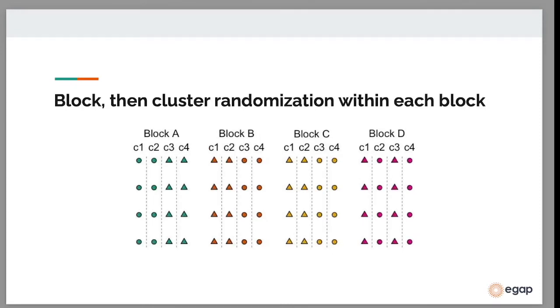We can also combine the two by doing cluster randomization within each block. So in this figure, each column is a cluster, and we have four clusters within each block. And so you can see that within each column, all the units are either all circles or all triangles. But within the block, so these are colors, you have both circles and triangles.